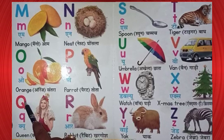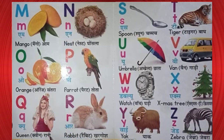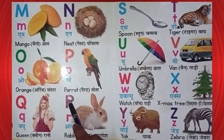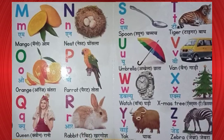Q. Q for queen. Queen means rani. R. R for rabbit. Rabbit means kargosh.